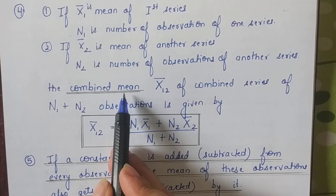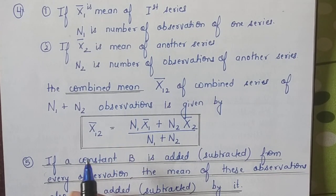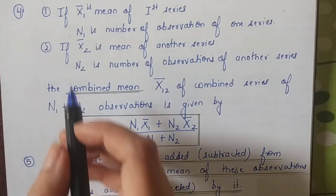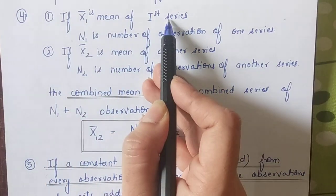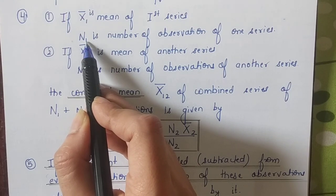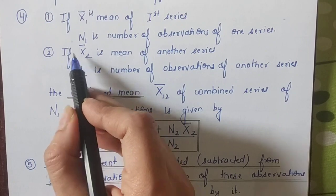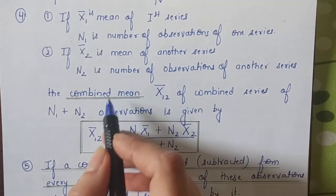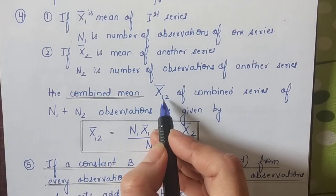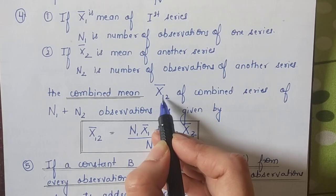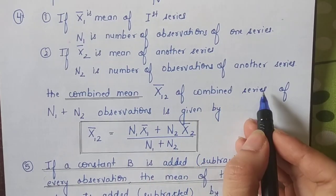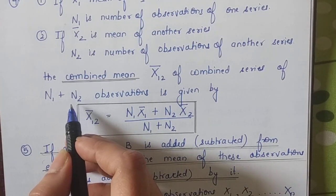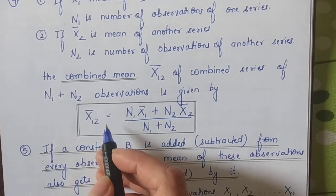Now the next property is about combined mean. If we have more than one series and we know their means and number of items, then we can calculate their combined mean. If suppose I have x̄₁, that is mean of the first series, and I know the number of observations n₁, and I also know x̄₂ for the second series and n₂, then I can easily find the combined mean.